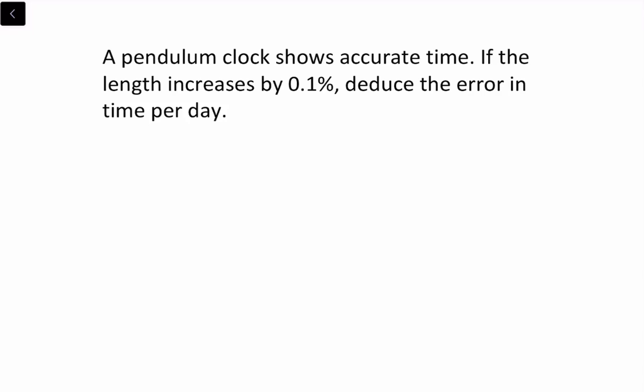Hello everyone. Today let us discuss one more numerical. The numerical goes like this: A pendulum clock shows accurate time. If the length increases by 0.1%, deduce the error in time per day.